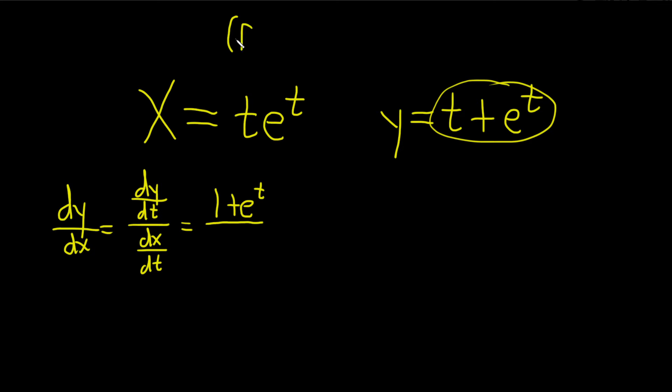We'll recall the product rule. It says if you have a function f times a function g and you take the derivative, think of f as your first function and g as your second function. So it's the derivative of the first times the second plus the first times the derivative of the second. So here f is our t and g is our e to the t.